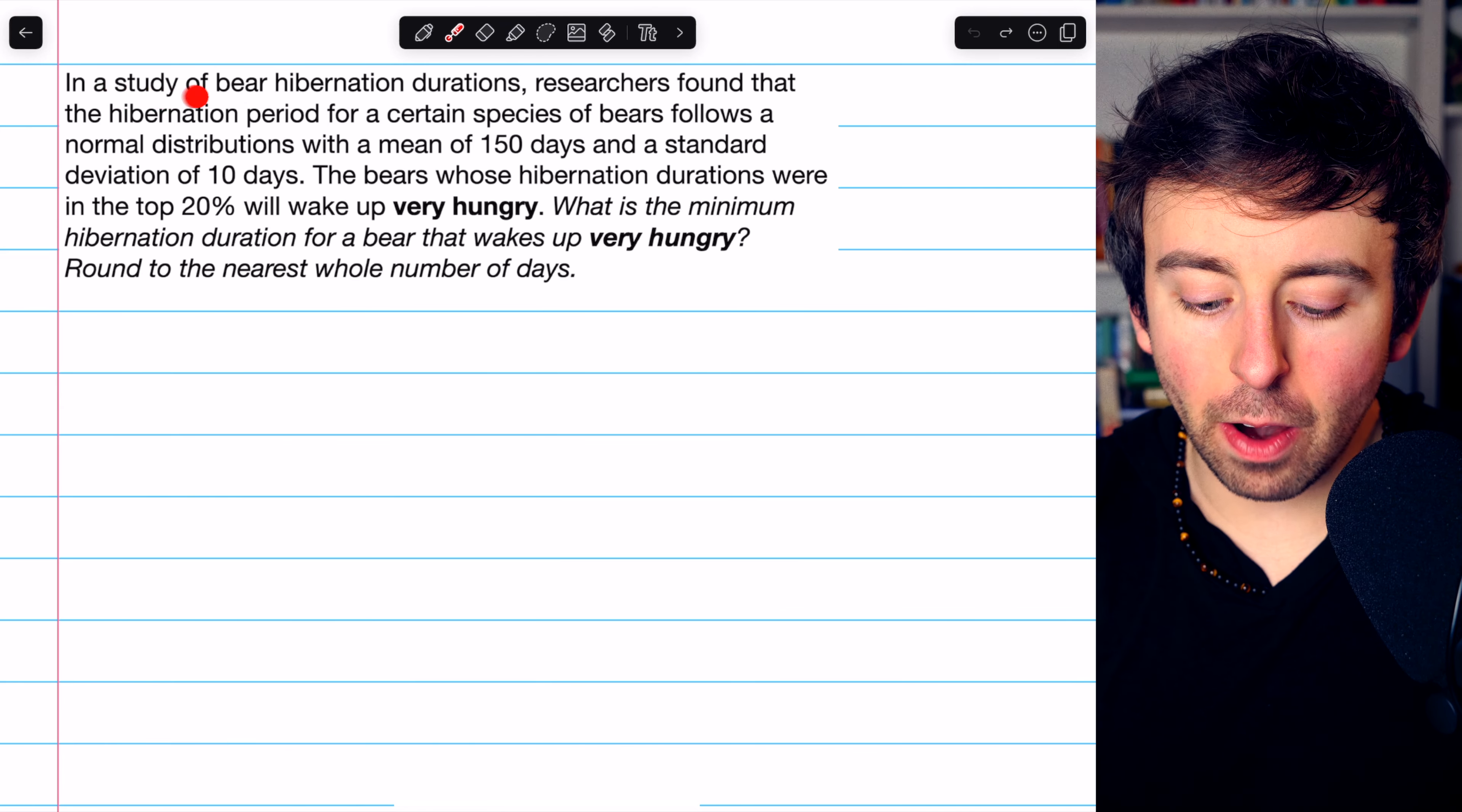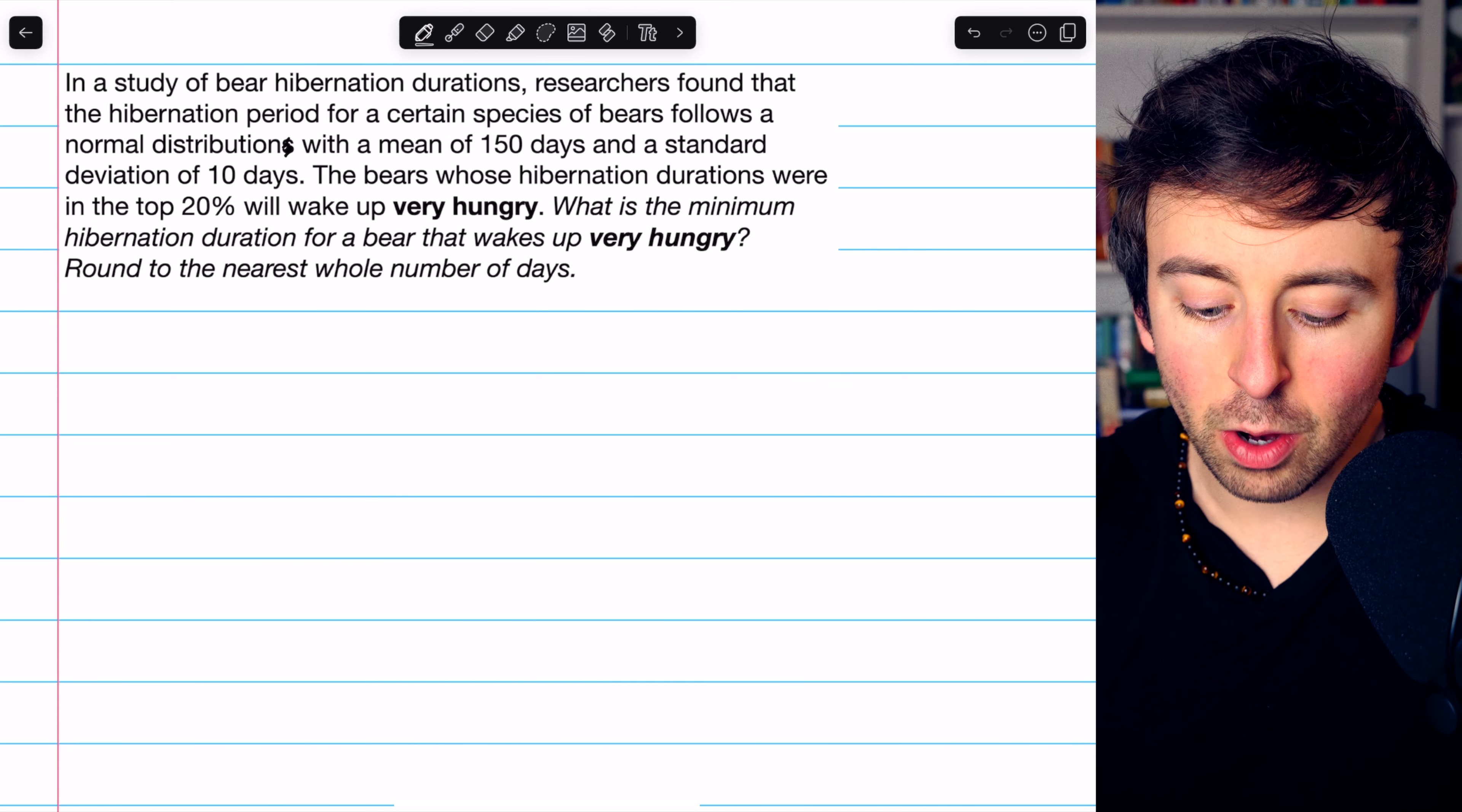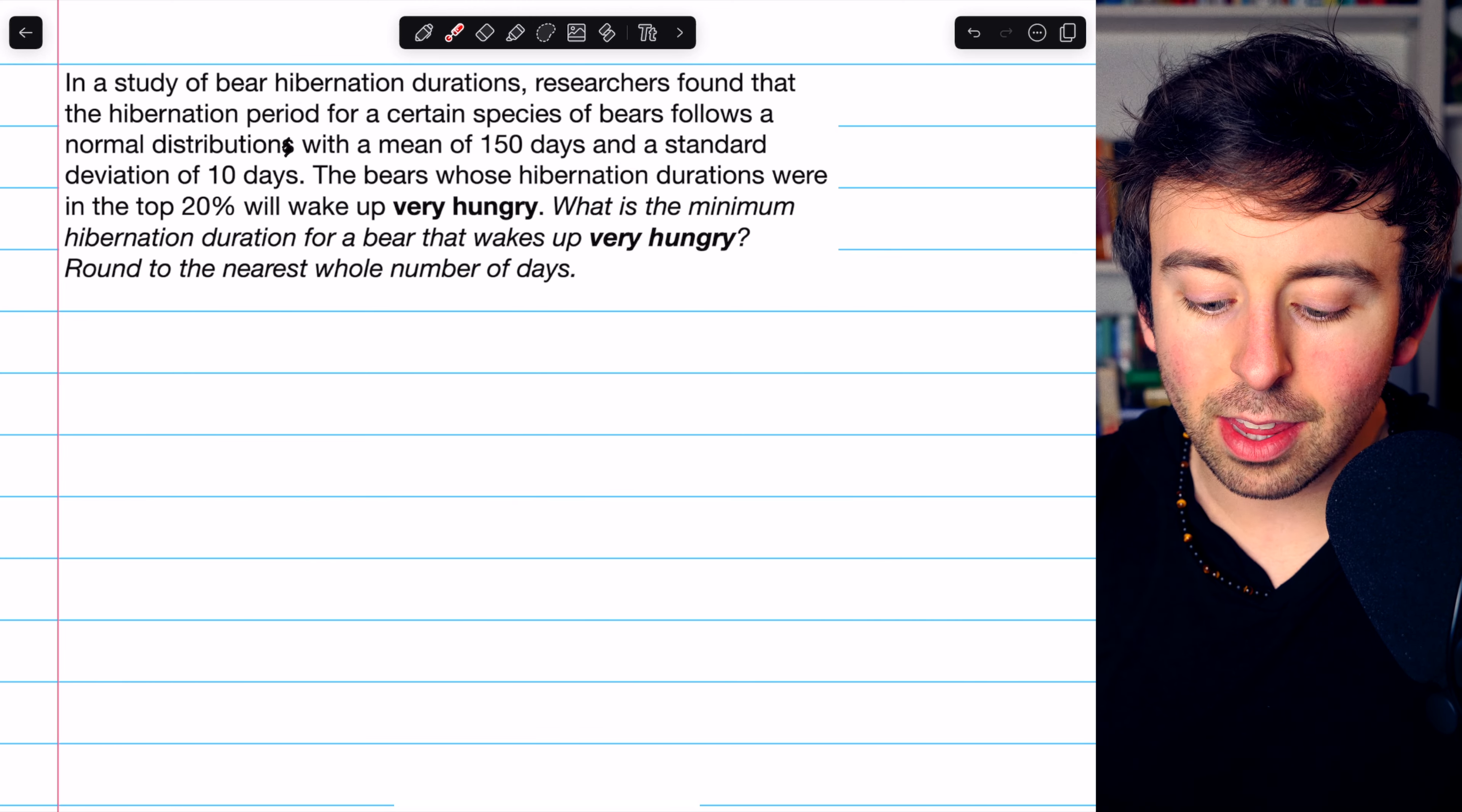In a study of bear hibernation durations, researchers found that the hibernation period for a certain species of bears follows a normal distribution with a mean of 150 days and a standard deviation of 10 days.